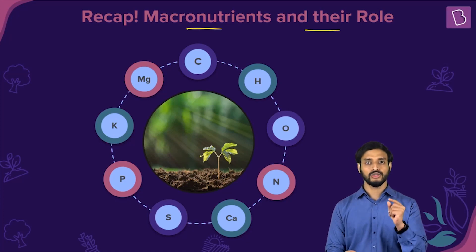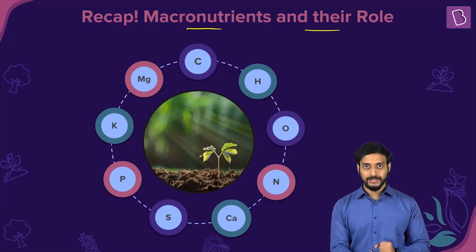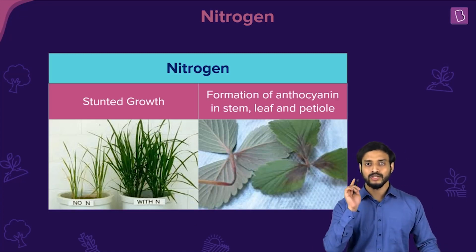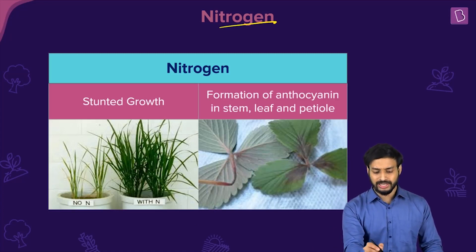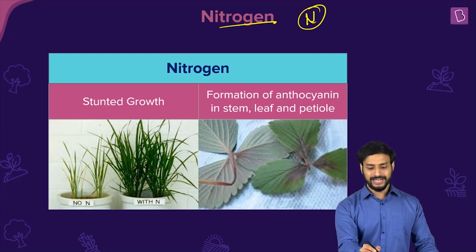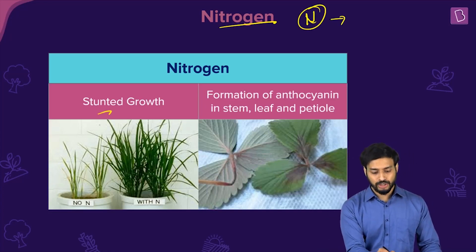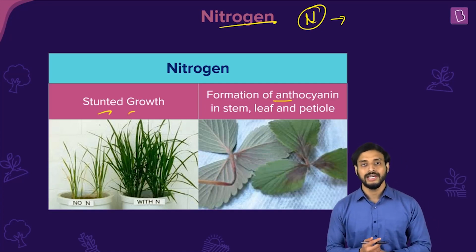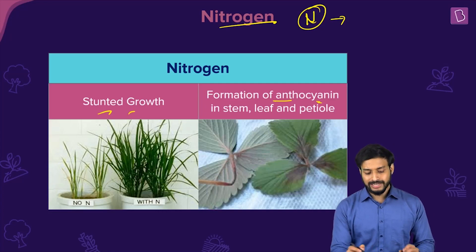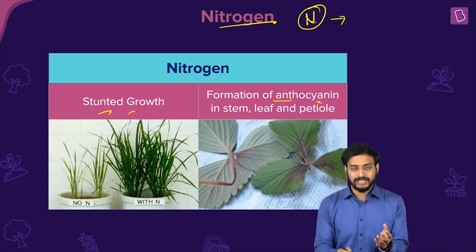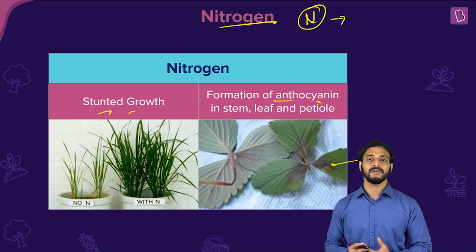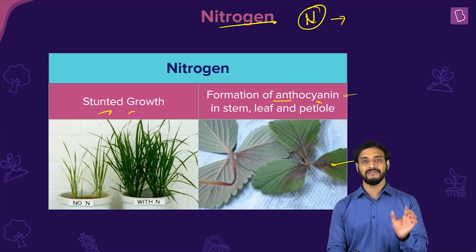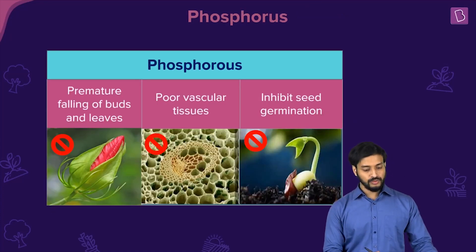Get ready and take quick notes. For nitrogen, write 'N' and note two symptoms: stunted growth, and formation of anthocyanin. Stunted growth means proper growth does not happen. Anthocyanin is a pigment — when it forms in the stems, leaves, and petiole, it causes darkening of those plant structures.